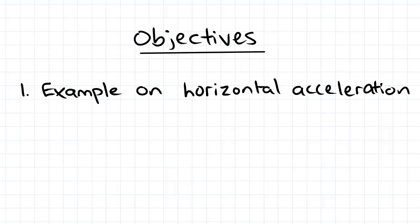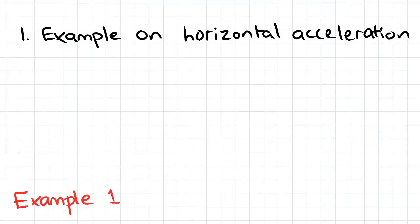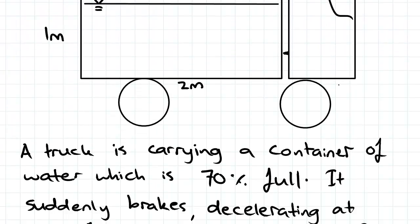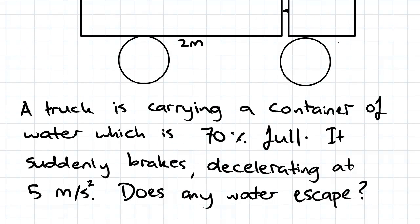Hey guys, we're looking at an example on rigid body motion, in particular horizontal acceleration. Here is our example: we've got a truck carrying a container of water which is 70% full. It suddenly brakes, decelerating at 5 meters per second squared, and we're asked to determine whether any water escapes.